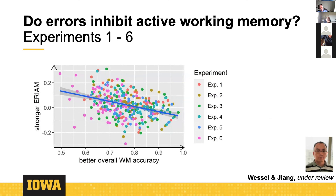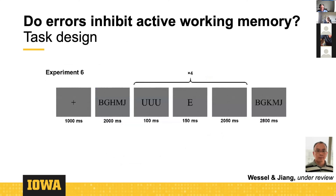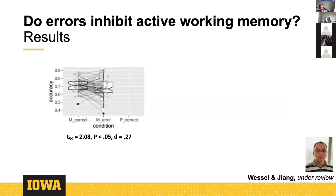As a final step, we simply made the task more difficult. All experiments used an adaptive staircasing algorithm to find an ideal load for each participant — challenging but not at chance level. We made the algorithm slightly stricter, adding one to their load while ensuring above-chance accuracy. With this more difficult load, we found the ERAM effect even in the temporal flanker paradigm at the group level, and again found the same correlation between the interruption effect and overall working memory accuracy.